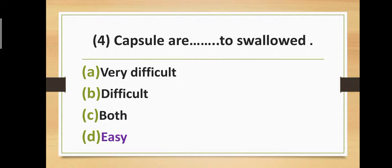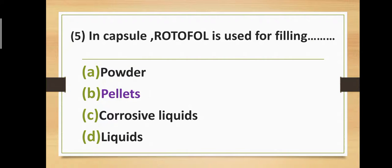Question number four: Capsules are dash dash to swallow — Option A: very difficult to swallow. Option B: difficult to swallow. Option C: both difficult and very difficult. Option D: easy to swallow. The correct answer is option D — easy to swallow. Capsules are easy to swallow.